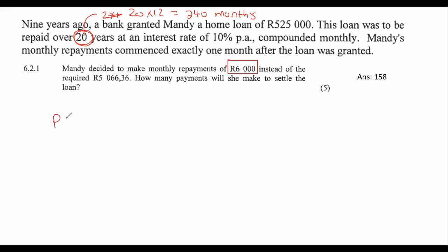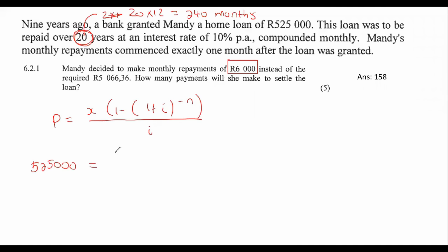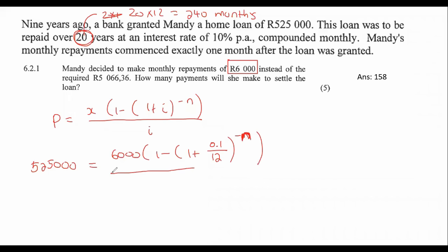We're going to use the present value formula, because this is a loan and we typically use this formula with loans. We know the loan amount was 525,000 Rand. We know that Mandy's going to pay 6,000 Rand. The interest rate is 10%, which is the same as 0.1. We don't know how long this is going to take, so we're just going to leave it as minus N, close the bracket, over 0.1 over 12.